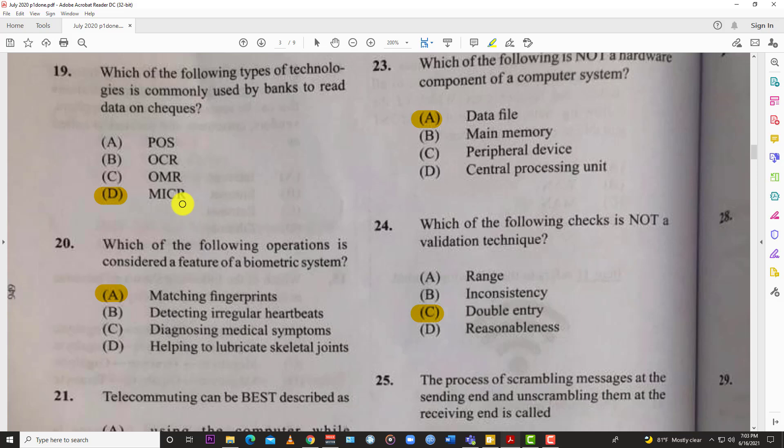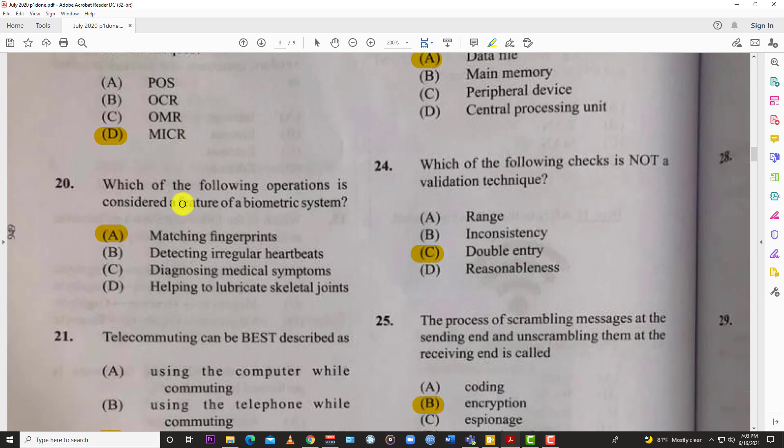Number twenty - that's the last one for this video. Which of the following operations is considered a feature of a biometric system? Biometrics is about your body, so the best answer is A, matching fingerprints. That's what you see on your phones - you touch and use a fingerprint to open your phone, that's biometrics.